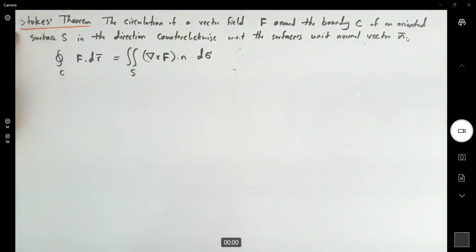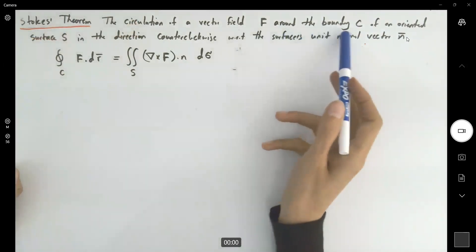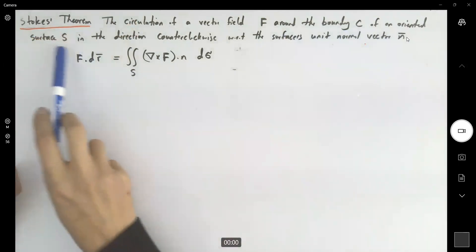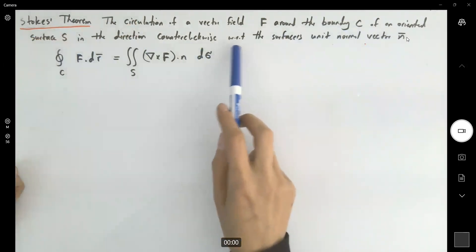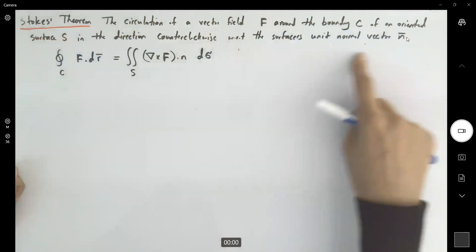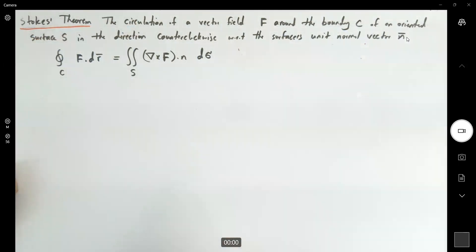Well, recall the Stokes theorem. It says the circulation of a vector field f around the boundary c of an oriented surface s in the direction counterclockwise with respect to the surface unit normal vector n is defined this way.